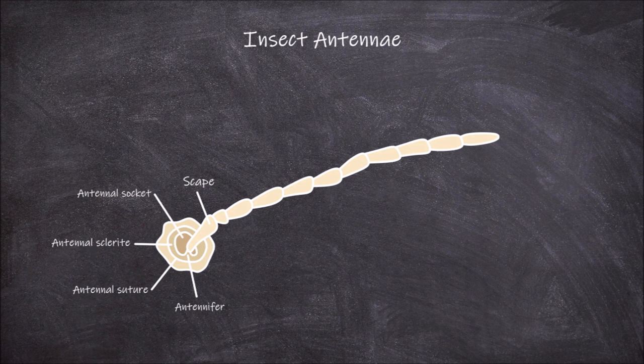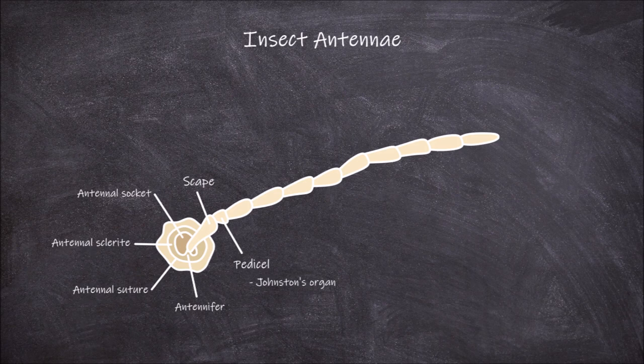The second part of the antennae is the pedicel. The pedicel is a short segment that joins the scape to the flagellum. It usually contains a specialized sensory organ called Johnston's organ. This organ functions in detecting movement in the flagellum portion of the antennae.